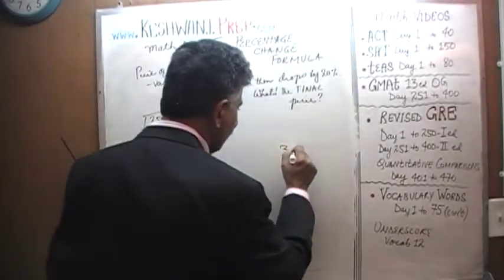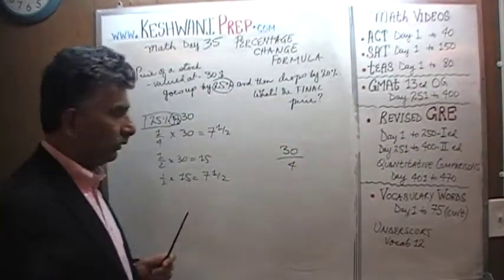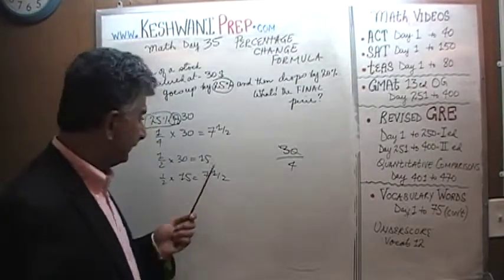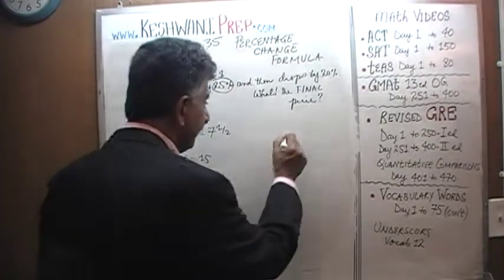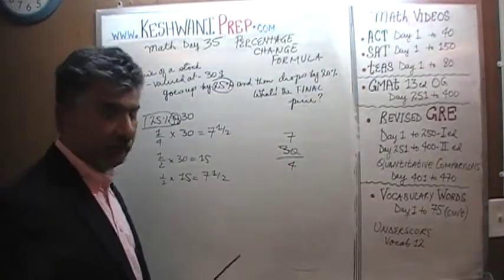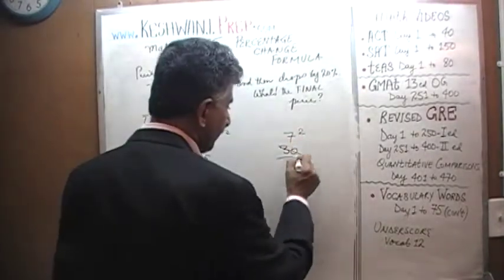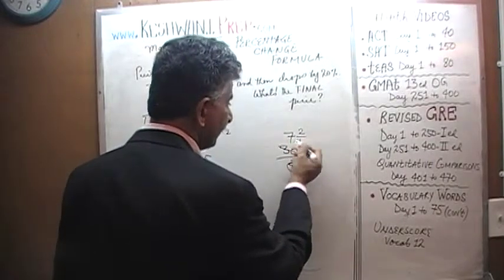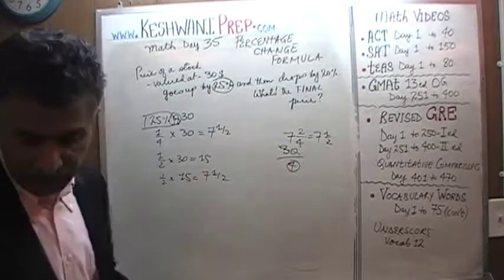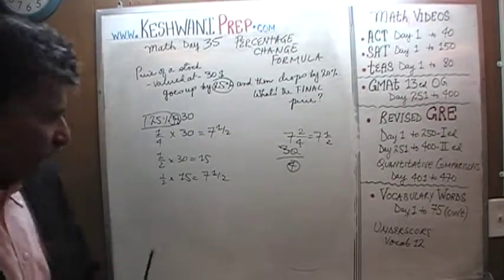Or if you like, you could just simply divide it by 4. 30 has 7 fours. 7 fours are 28. After we take away 28 from 30, we have a remainder of 2. And that remainder has to be divided by 4. So it's 7 and 2/4, which is 7 and a half. So it goes up by 7.50.